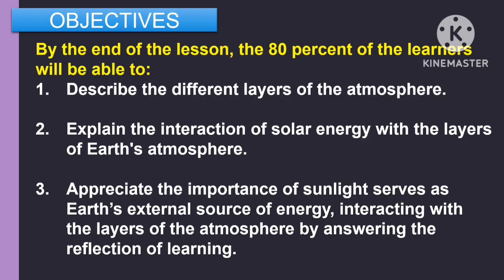For the objectives, by the end of the lesson, 80% of the learners will be able to: first, describe the different layers of the atmosphere; second, explain the interaction of solar energy with the layers of Earth's atmosphere; and third, appreciate the importance of sunlight as Earth's external source of energy interacting with the layers of the atmosphere by answering the reflection of learning.